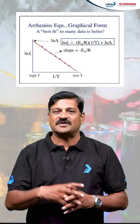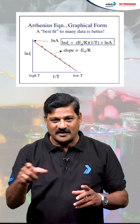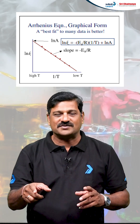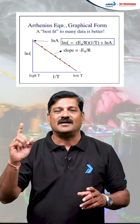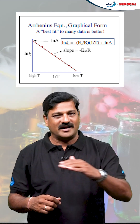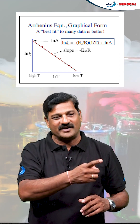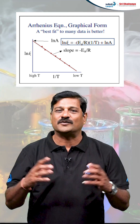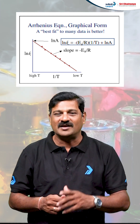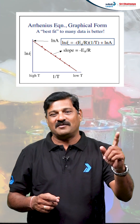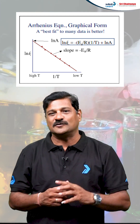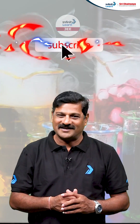This expression can be interpreted graphically. Plotting log k on the y-axis and 1 by T on the x-axis gives a straight line with a negative slope. The slope equals minus Ea by 2.303 R, which can be used to calculate the activation energy from the Arrhenius equation.